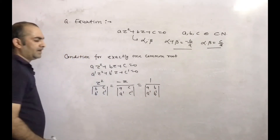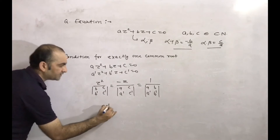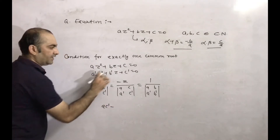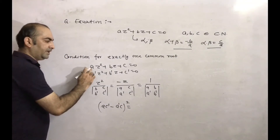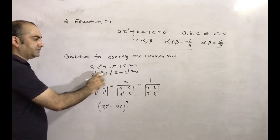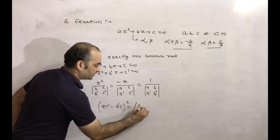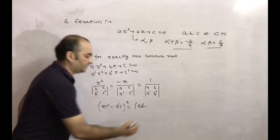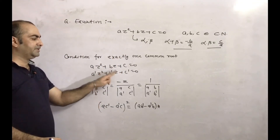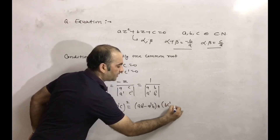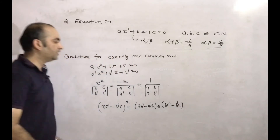We can also find the condition directly. The direct condition for exactly one common root is: (a*c' - a'*c)² = (a*b' - a'*b) × (b*c' - b'*c). This is the condition for exactly one common root.